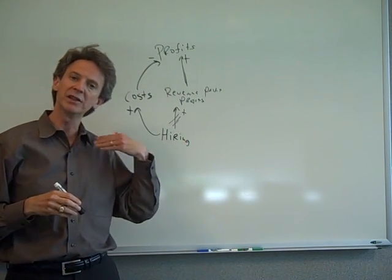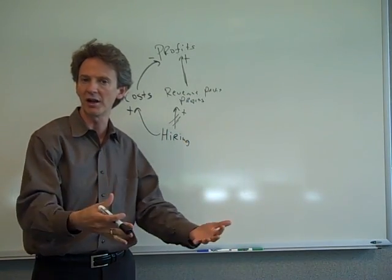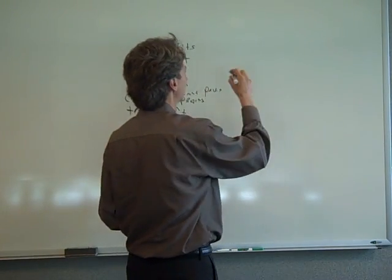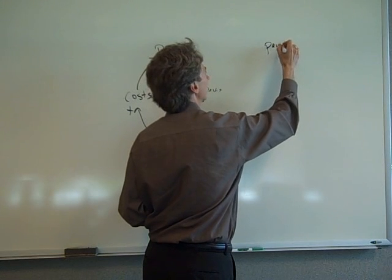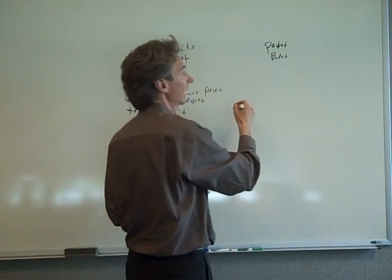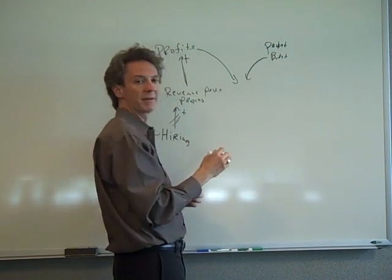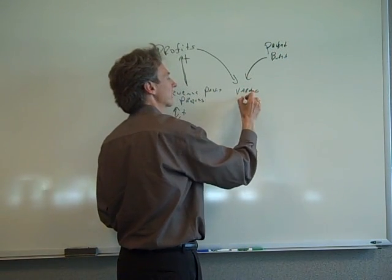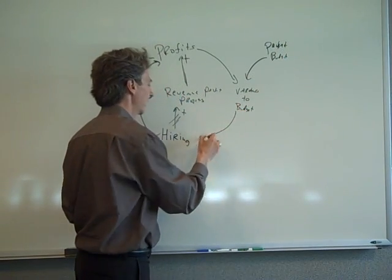So how do companies usually decide whether they are going to hire? Well they have a budget and if all is going well they hire up to the budget. So the way to diagram that out is you have a profit budget, and you compare your profits, your actual profits to your budget. And you have a variance to budget, and that will dictate your hiring.